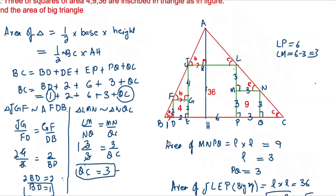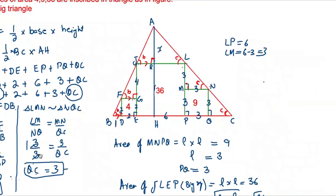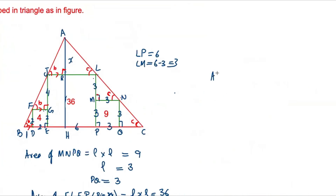Now we find the height AH. We name AR as x and JR as y, so the length AH equals x plus 6. The length RL equals 6 minus y, because JL total length is 6.